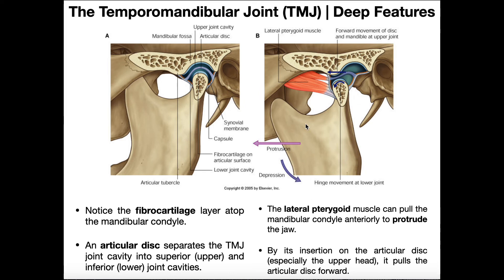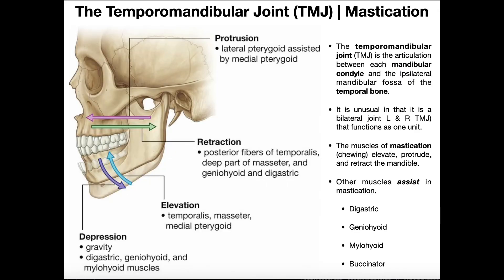When you do the reverse — elevate the jaw — you would actually retract first and then rotate in the opposite direction to elevate the mandible. That leads us back to the slide covering the major movements associated with the TMJ.